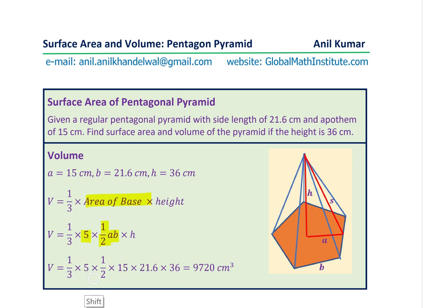Substituting the values, one over three times five times half times 15 times 21.6 times 36. Multiplying them, we get the volume as 9720 centimeter cube.